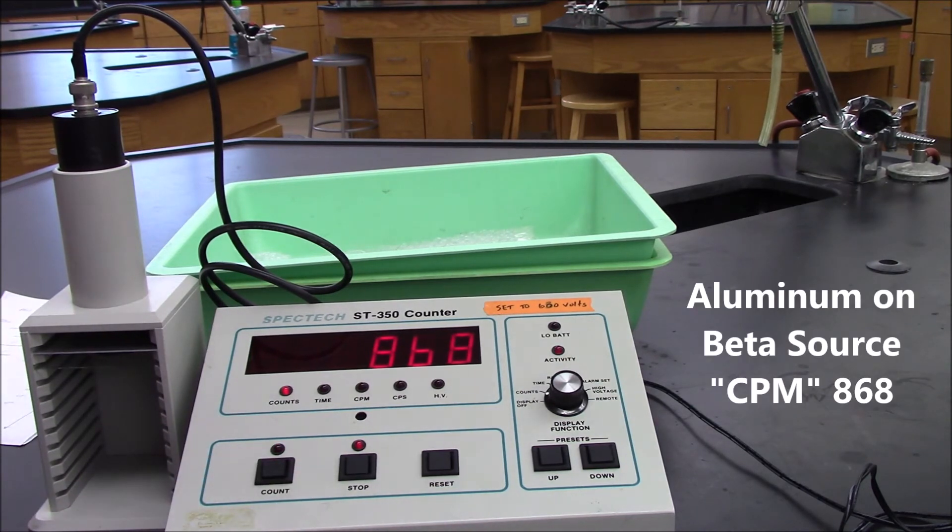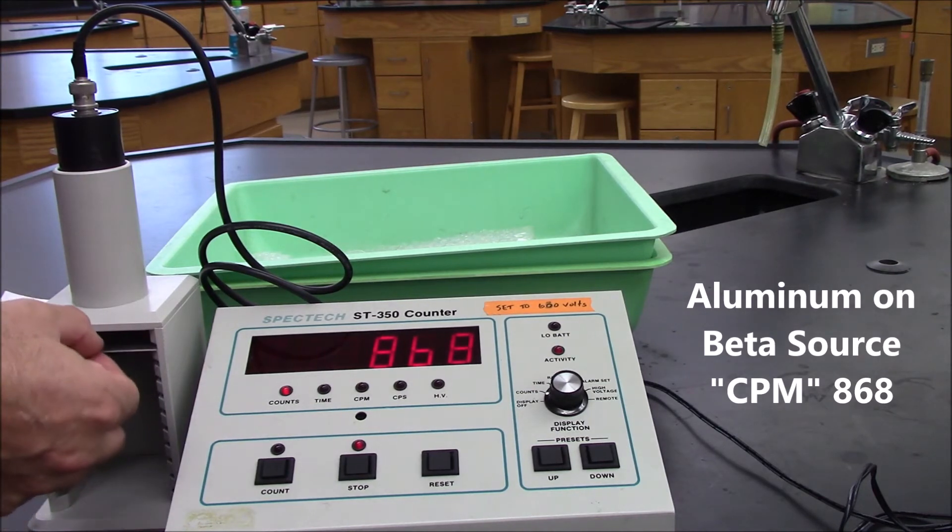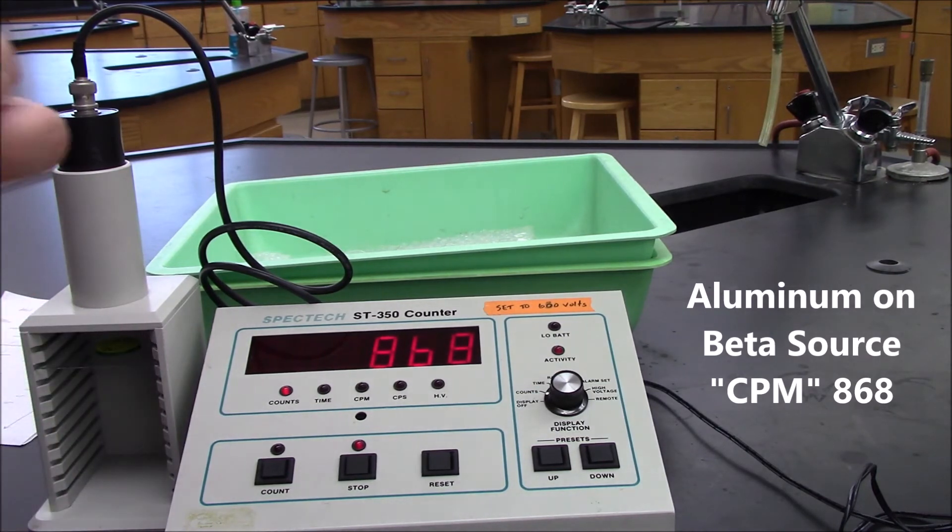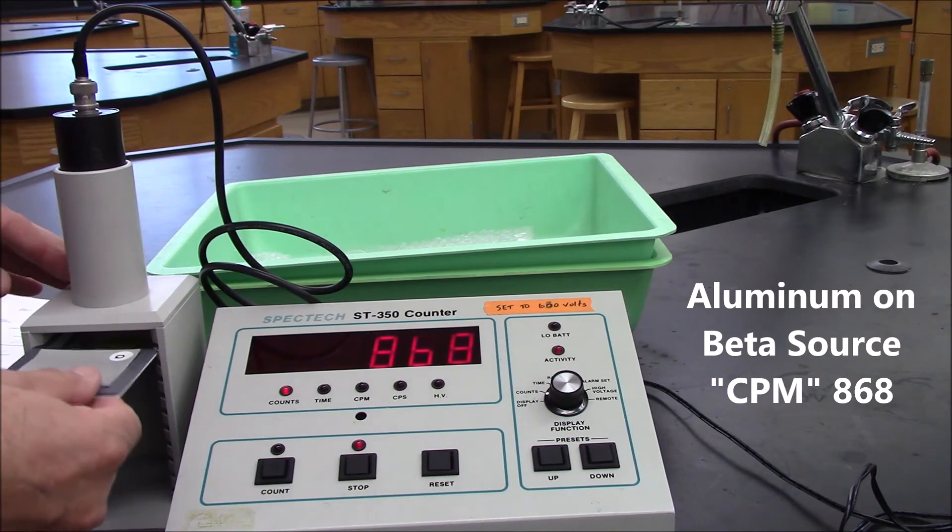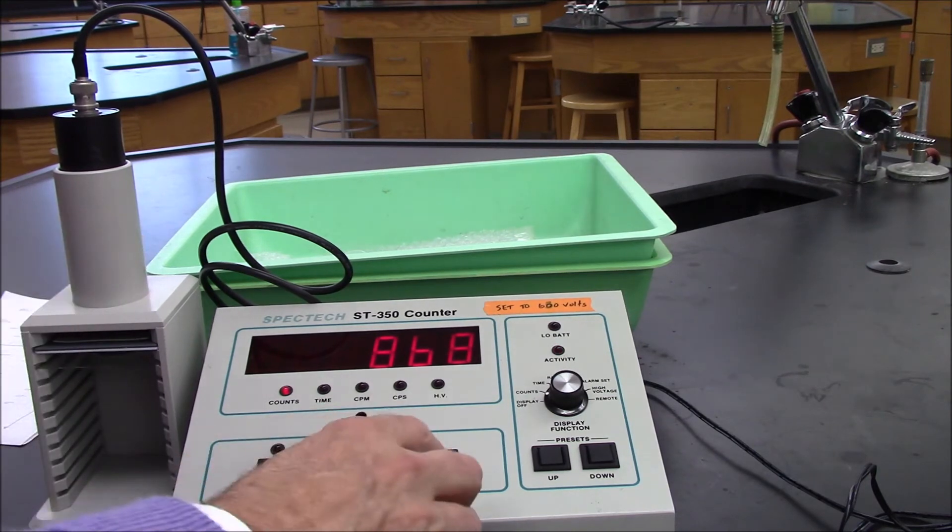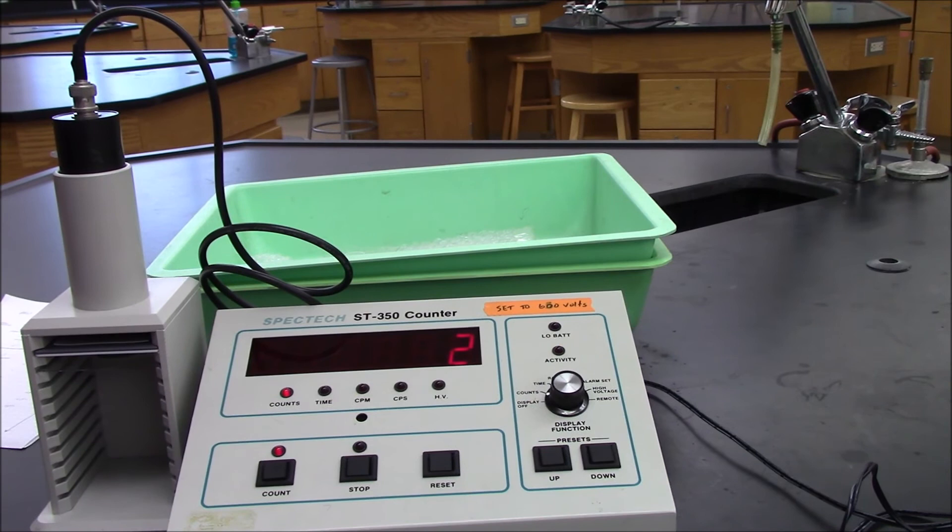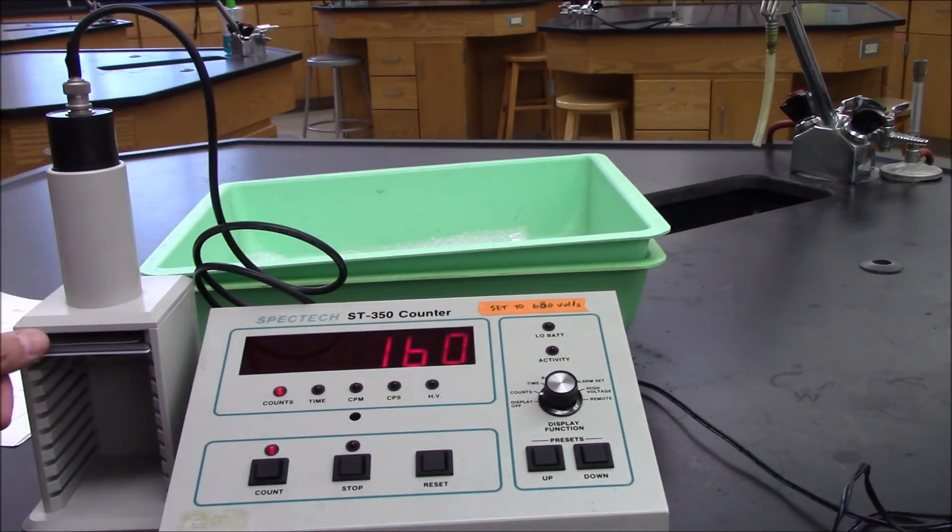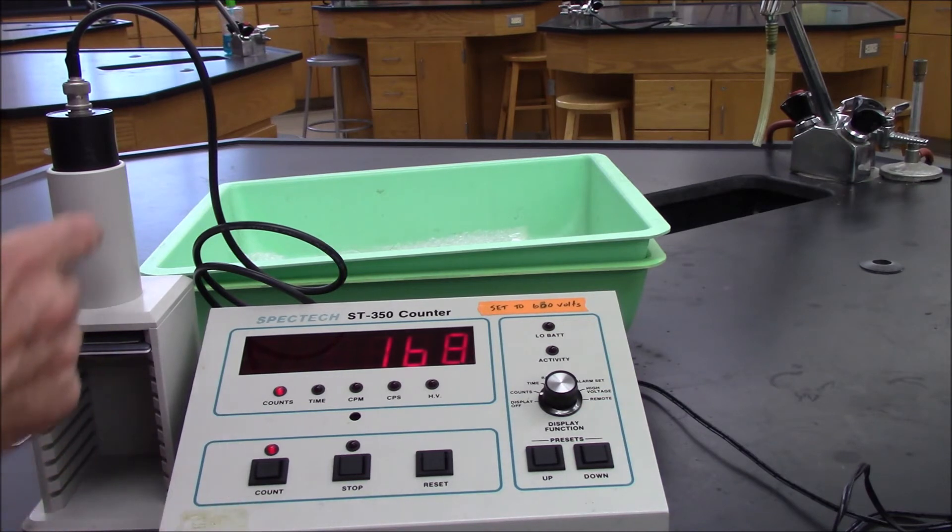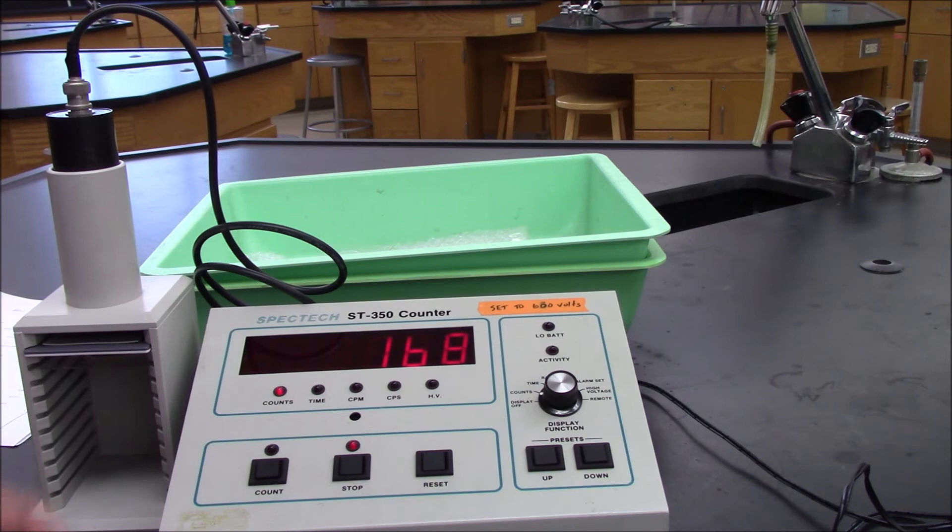Now I'm going to replace the aluminum with a thin sheet of lead, and we'll do the same thing. So now we're just to the end of the thin piece of lead. You can see we've taken out a pretty large percentage of all the radiation getting to the detector. Remember, we were well over 2,000 before.